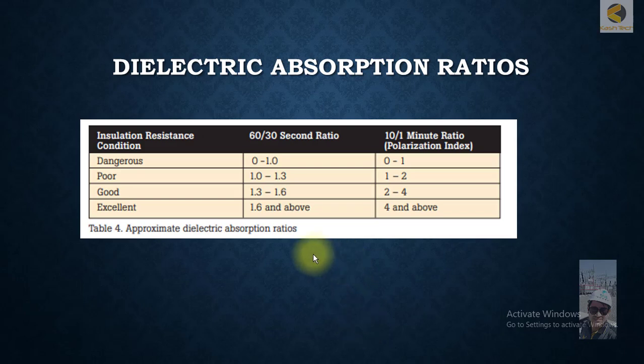When you take the readings, you can form different ratios. For example, you can have a ratio of 30 seconds to 60 seconds, and a ratio of 10 minutes to 1 minute, which is called the polarization index.